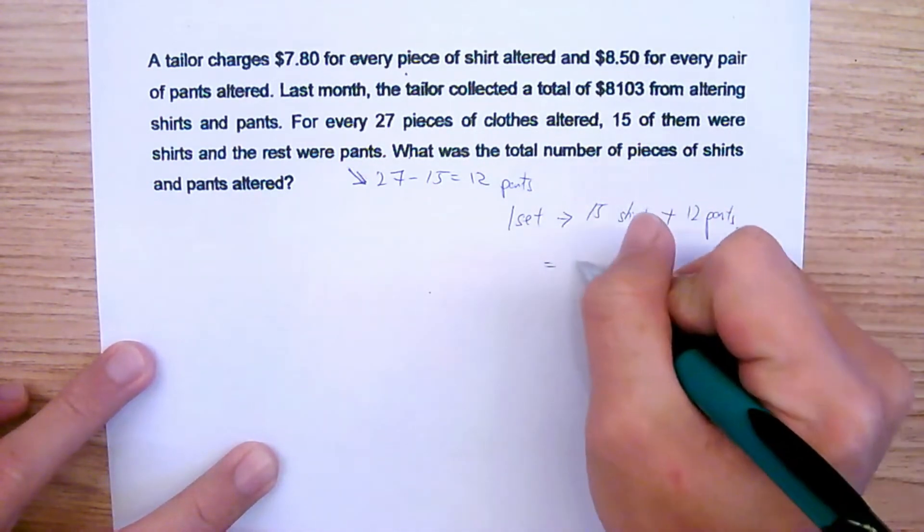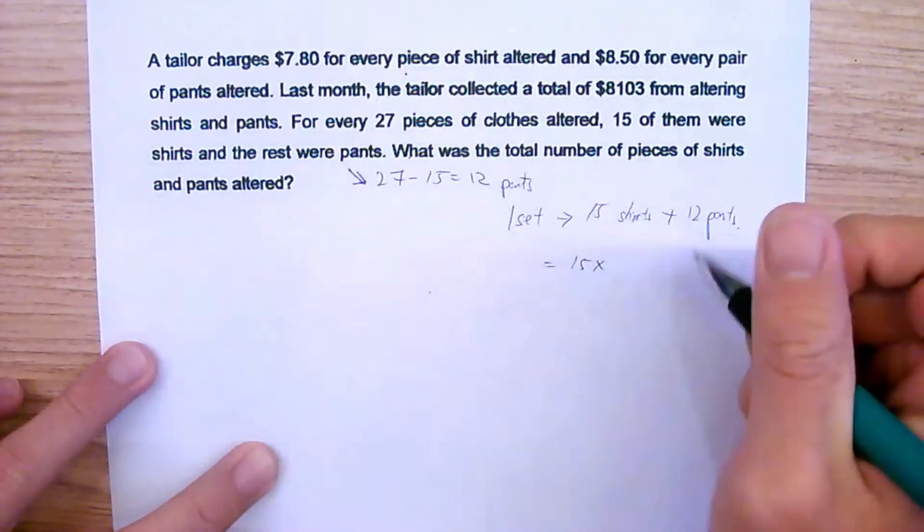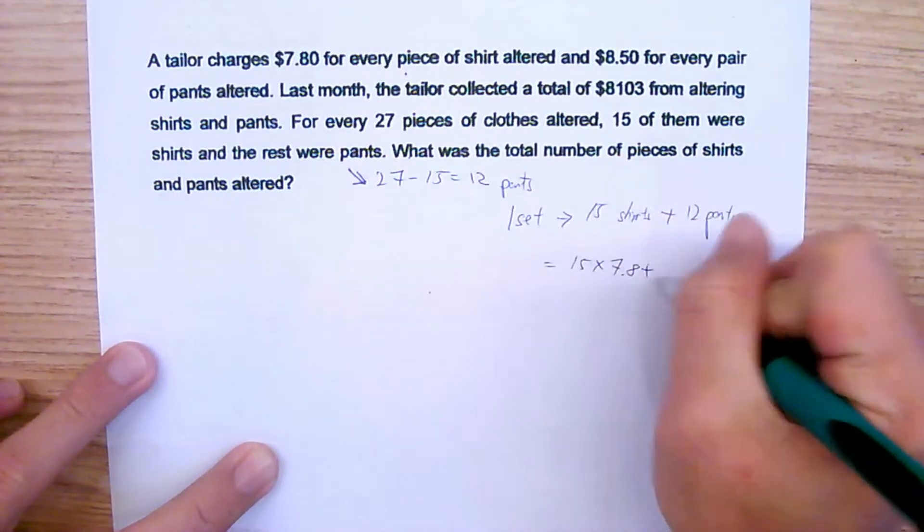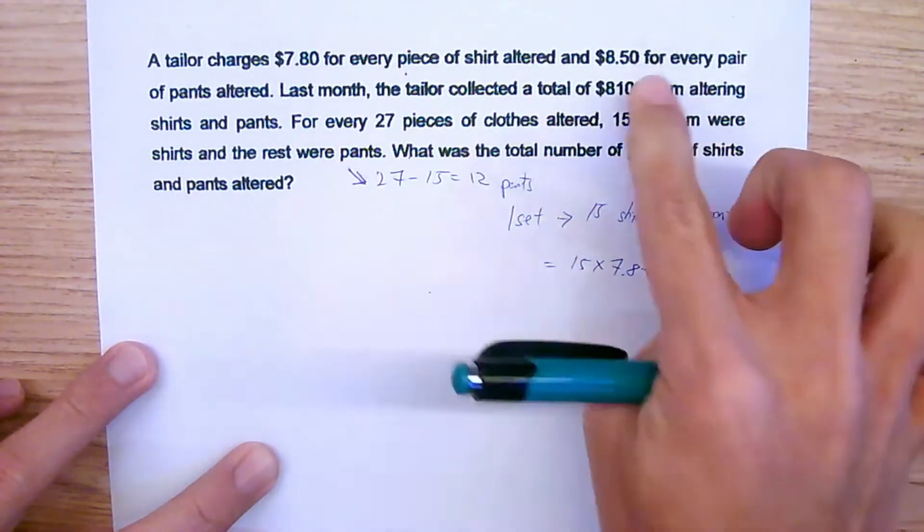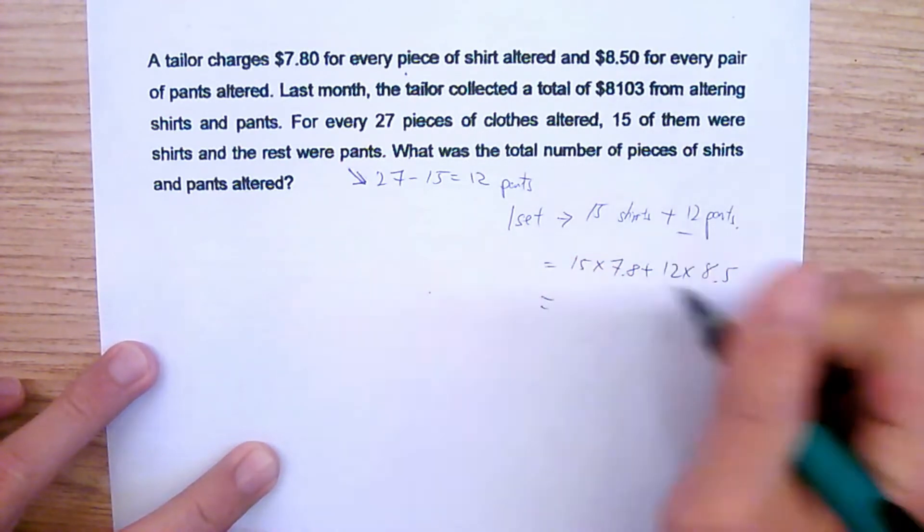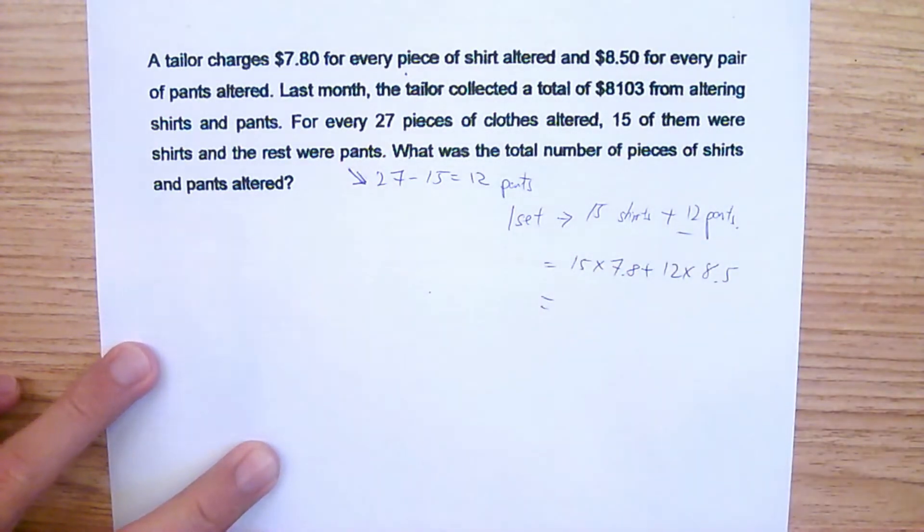So 15 shirts, right? 15 multiplied by 7.80 plus 12 multiplied by 8.50. Let's just throw this inside the calculator and see what we're going to get.